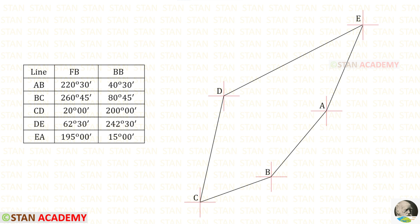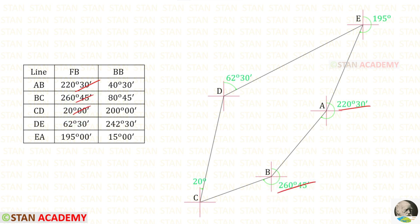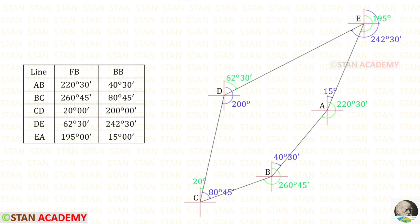Now, in the traverse, let us enter the fore bearings and back bearings: fore bearing of AB, fore bearing of BC, fore bearing of CD, fore bearing of DE, and fore bearing of EA. Now let us enter the back bearings: back bearing of AB, back bearing of BC, back bearing of CD, back bearing of DE, and finally the back bearing of EA.